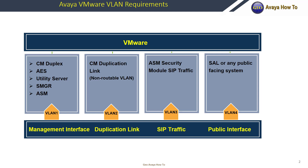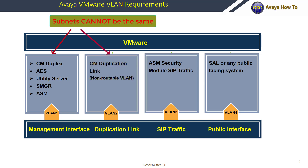In my first video preparing for Avaya Aura 7.13, we went over the VMware VLAN requirements. When you deploy a duplex CM, you will need a VLAN for your management IP — this is where your primary and standby server IPs will go along with your processor Ethernet virtual IP. Then you will need a non-routable VLAN for your CM duplication link. The duplication link is what CM uses to monitor its heartbeat and to keep the databases synced between the primary and standby server.